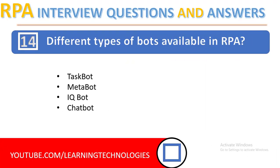Next question: what are the different types of bots available in Robotic Process Automation? A bot or robot refers to a set of commands used to automate a task. There are usually four types of software bots: task bot, metabot, IQ bot, and chatbot.